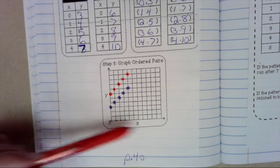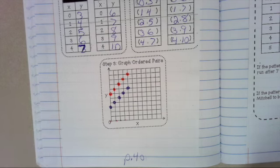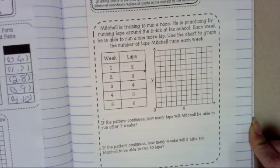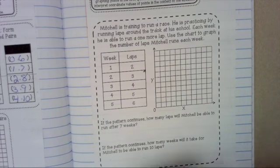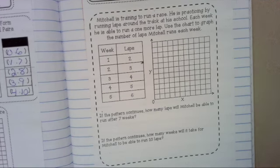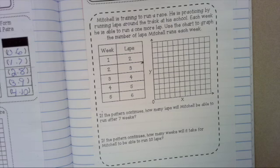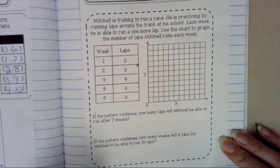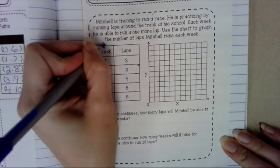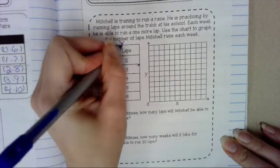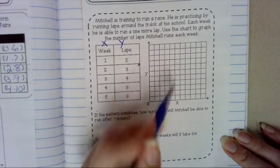Remember, you have to do X before you do Y. All right. Now we're going to look at a word problem on a graph. So it says, Mitchell is training to run a race. He is practicing by running laps around the track at his school. Each week, he is able to run one more lap. Use the chart to graph the number of laps Mitchell runs each week. So we're going to use this chart. We're going to make these our X's and these our Y's.